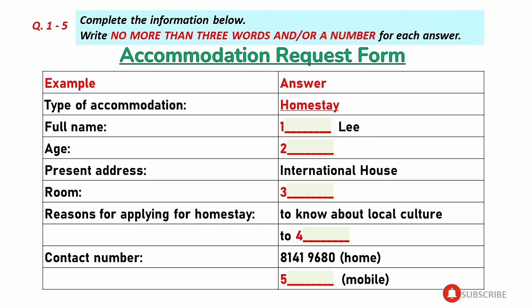You will see there is an example that has been done for you. On this occasion, only the conversation relating to this will be played first. The type of accommodation that the student hopes to apply for is homestay, so homestay has been written in the space. Now we shall begin. You should answer the question as you listen, because you will not hear the recording a second time. Listen carefully and answer questions one to five.